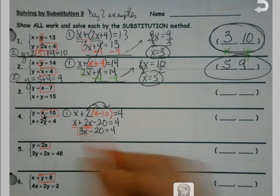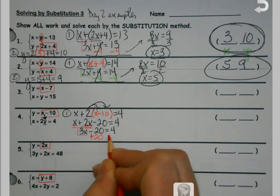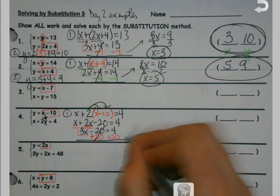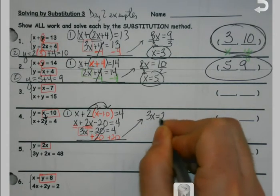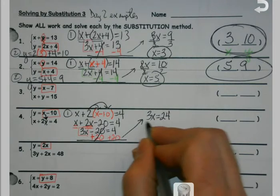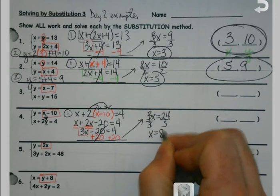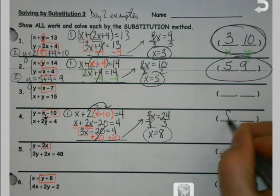And once I've done that, just like we've done in those first 2, my job is to get the 3x alone. So since I'm minusing 20 from it, I do the opposite. And you're like, dang, it seems like we divide the last step every time. And more times than not, we will.